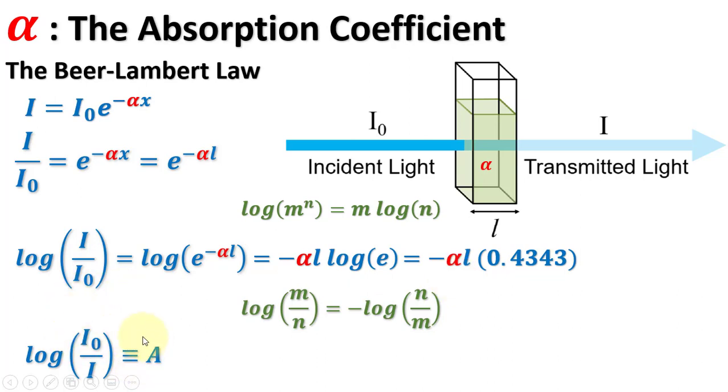Log I0 over I is defined as the absorbance A. So applying this logarithmic relation, the negative sign is cancelled on both sides and the absorbance equals alpha L times 0.4343.